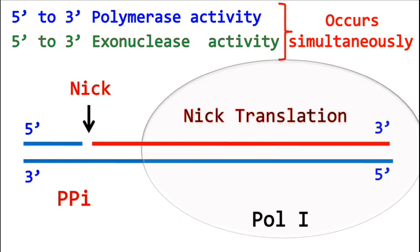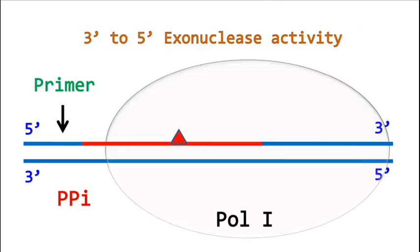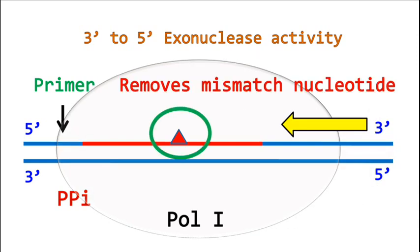The third type of activity of DNA polymerase is three prime to five prime exonuclease activity. This activity is useful when the polymerase adds wrong nucleotides in the DNA. The three prime to five prime exonuclease activity halts the polymerase and removes the wrongly added nucleotide. This avoids mutations in the newly replicated DNA.